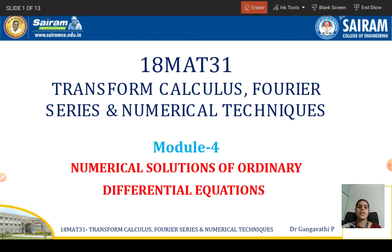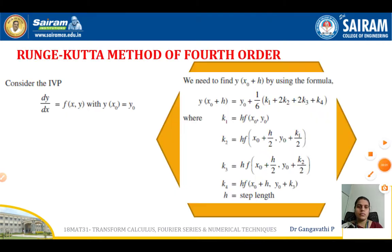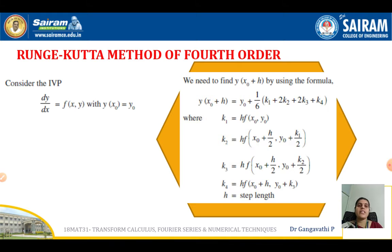In this session, let us discuss about another method which is called the Runge-Kutta method. This method is also called the Runge-Kutta method of fourth order. Why do we call it fourth order? Because we are going to use four constants — four parameters we are going to evaluate here. That is the reason we call it the Runge-Kutta method of fourth order.